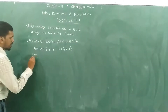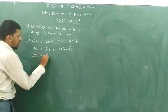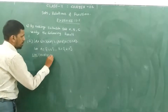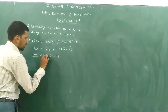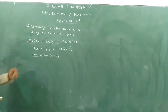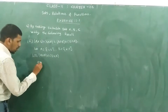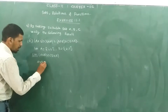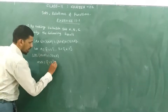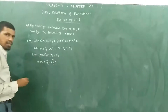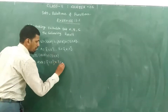Left hand side is A cross B intersection B cross A. We have the bracket A cross B. So A cross B is A set {1,2} cross B set {2,3}.